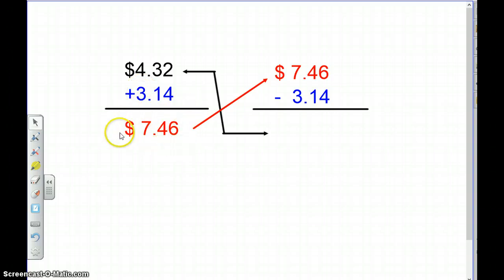If I added correctly, I should be able to take this answer right here, my sum, and put it up here into a subtraction problem. And I'm going to now just scoot this one over and subtract. So 6 minus 4, I know, is 2.